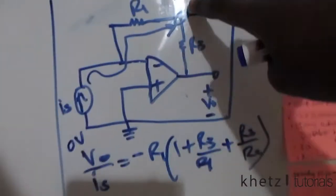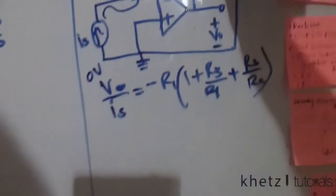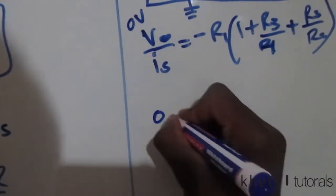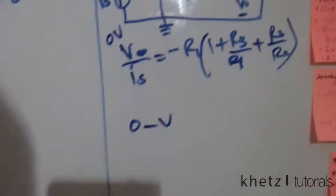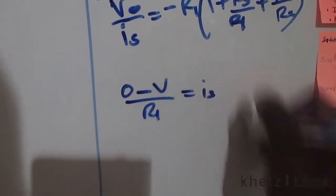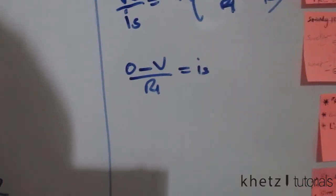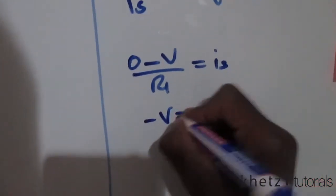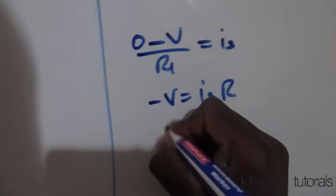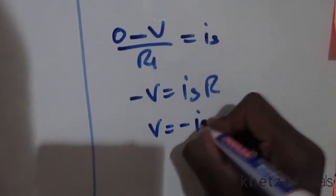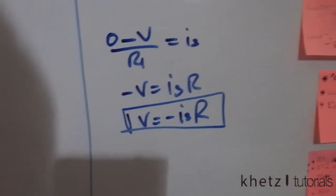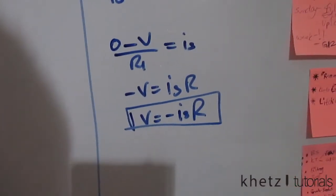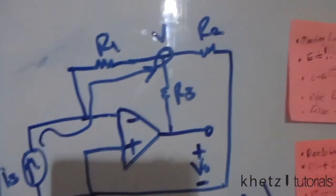I'll label this node V. From ground to V we have current is. Using Ohm's law: zero subtract V divided by R gives is, so rearranging we get negative V equals is·R, or V equals negative is·R. This will be one of our key equations to help solve the problem.